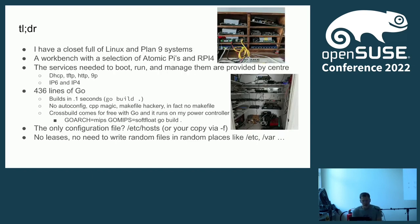Since COVID, I've had a closet full of Linux and Plan 9 systems and other things. I've got a workbench with Atomic Pis and ARM boards stacked up on it and a network switch. Things rotate through that closet pretty quickly as I do development on new and different motherboards. I have services I need to boot, run, and manage — and those are all provided by the Center right now: DHCP, TFTP, HTTP, and 9P on IPv6 and IPv4.